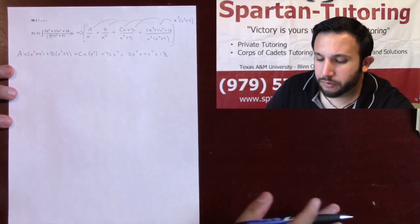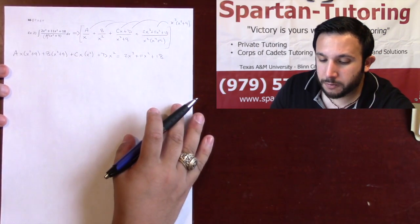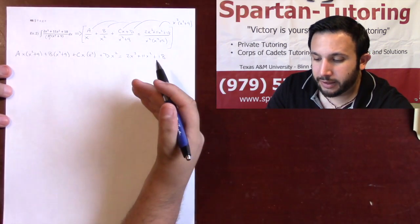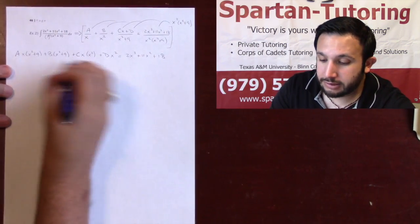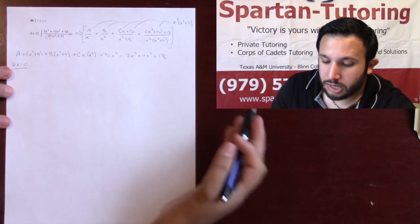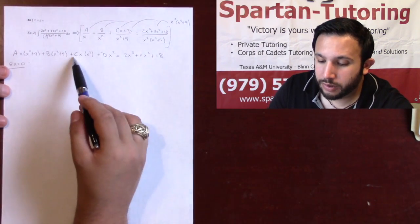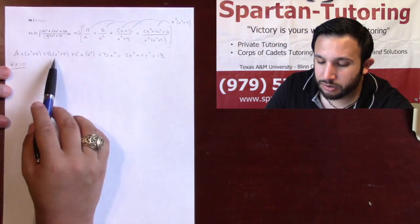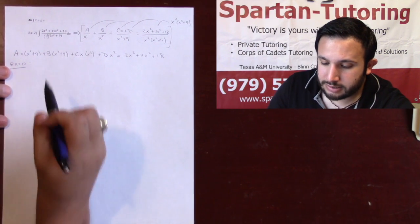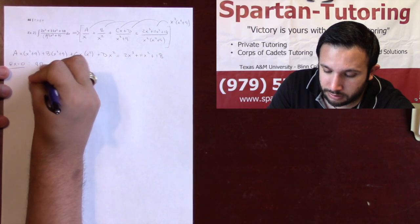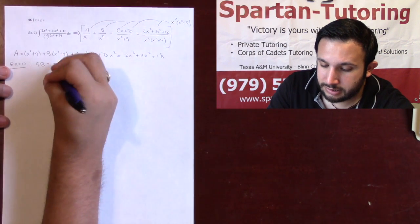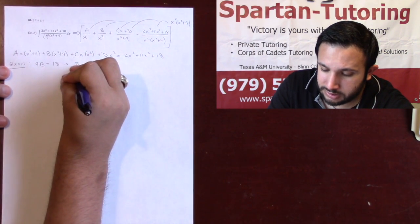Now that we've gotten rid of the fractions, let's try to get as many freebies as possible. A freebie is where I strategically plug in an x value to cancel all but one of the letters. I can do that at x equals 0, because A, C, and D will all go away, letting me isolate B. Plugging in 0, I'm left with 9 times B on the left and 18 on the right, which tells me that B equals 2.